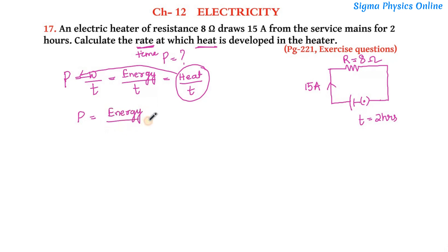So it's energy by time. Now the heat energy can be calculated using Joule's law of heating, that is H = I²Rt.